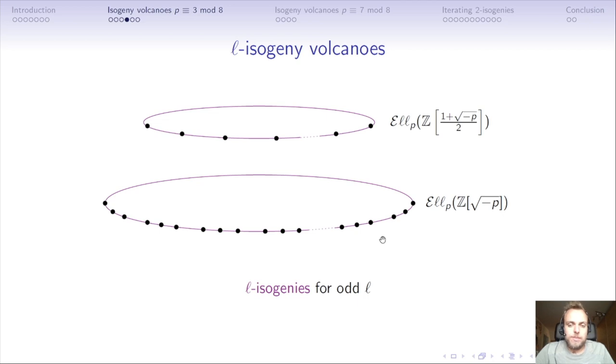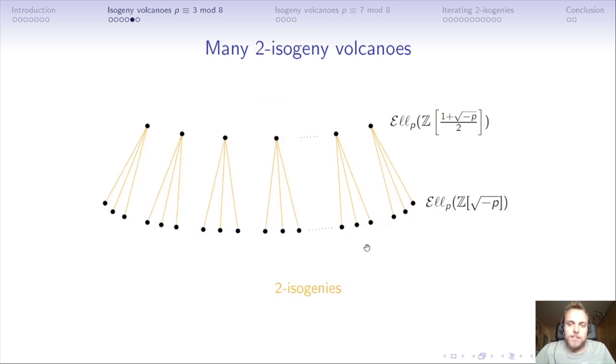These are two examples of L-isogeny volcanoes. Both the top and bottom are volcanoes—just cycles, very boring volcanoes because they have height zero, so their surface and floor collapse and are equal. Let's see what happens when L is 2. We still have the same elliptic curves over the ground field with the two endomorphism rings. However, now there are no horizontal isogenies. All of them change the endomorphism ring and we call them vertical isogenies. These are many 2-isogeny volcanoes: every elliptic curve here depicts the surface, and the tree at the bottom depicts the floor. Every four-tuple of curves forms a small isogeny volcano.